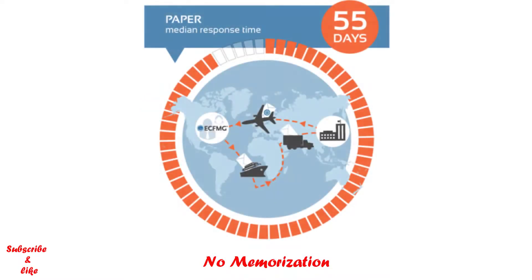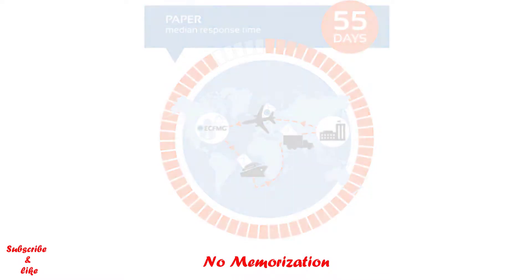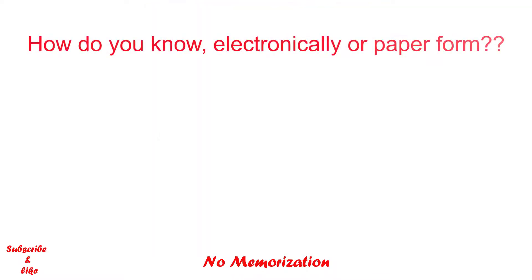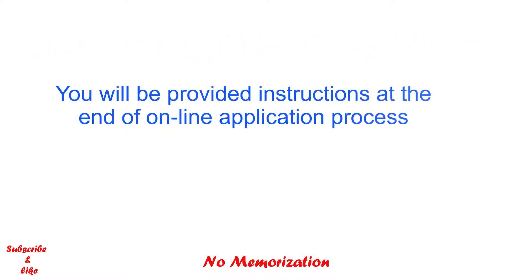Although it might take some time, there's nothing you can do. Now, how do you know whether your medical school prefers status verification electronically or via paper form? At the end of the online application process, you will be notified if your medical school completes verification electronically. On the other hand, if your medical school prefers Form 183, you will be provided with the form at the end of the online application process, along with detailed instructions on how to complete and submit it.